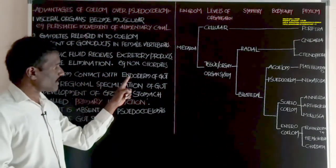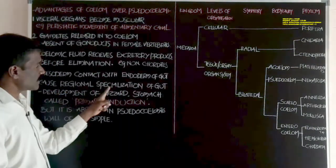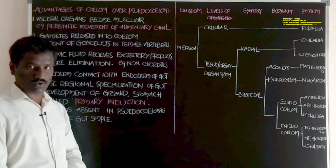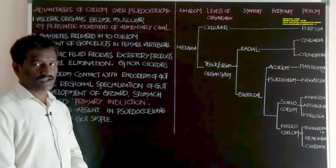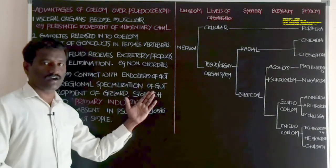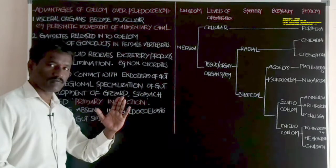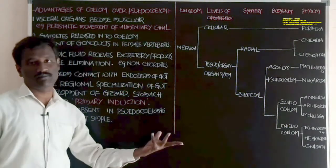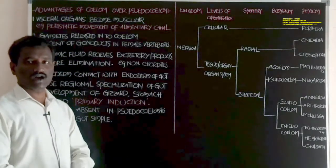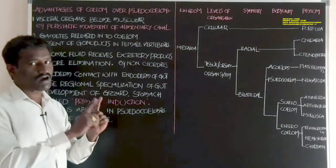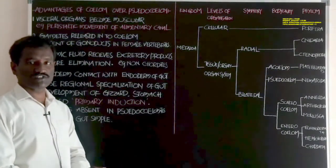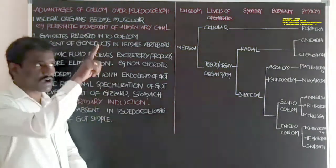Fourth advantage: mesoderm contact with the endoderm of the gut causes regional specialization of the gut. In animals which show true coelom developed from the mesoderm layer, the mesodermal epithelium is closely in contact with the food tube, or gut, or the alimentary canal. Some amount of regional specialization is also developed because of the attachment of the mesoderm to the alimentary canal or food tube, causing the development of specialized organs within the alimentary canal.